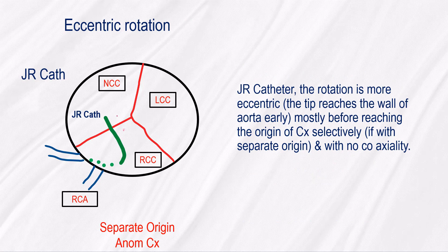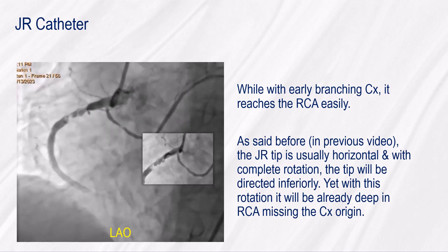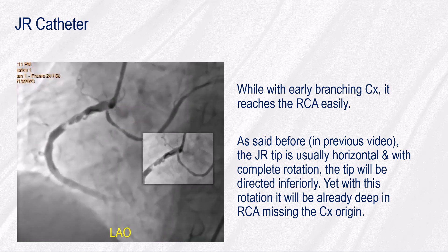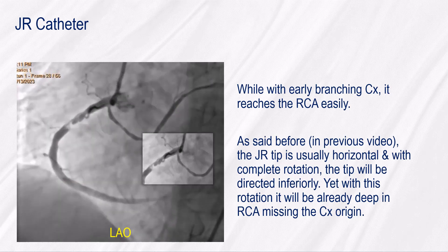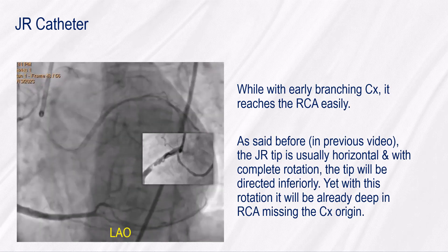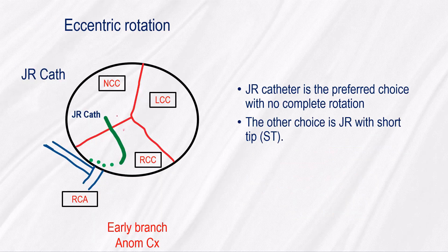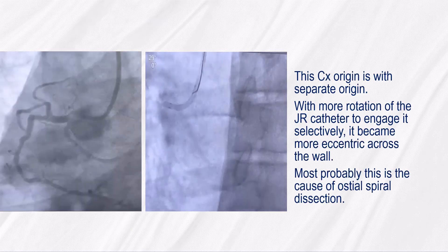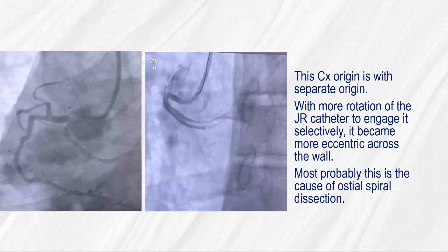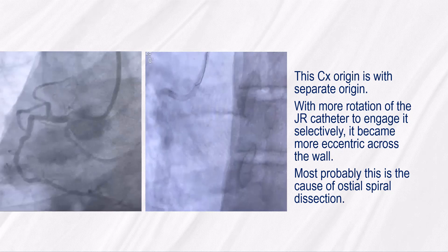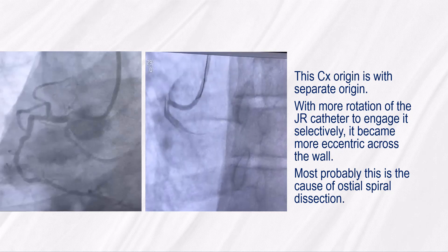With the Judkins right catheter, the rotation is more eccentric, so the tip reaches the aortic wall early — mostly before reaching the CX origin selectively if with separate origin, and with no coaxiality. With early branching CX, it reaches the RCA easily. The Judkins right tip is usually horizontal, and with complete rotation the tip will be directed inferiorly, but it will already be deep in the RCA, missing the CX origin. So in cases of early branch anomalous CX, Judkins right is the preferred choice with no complete rotation. This anomalous CX has a separate origin; with more rotation of the Judkins right catheter to engage it selectively, it became more eccentric against the wall, most probably causing ostio-spiral dissection.